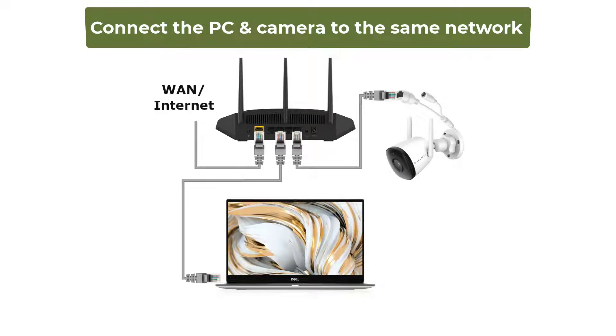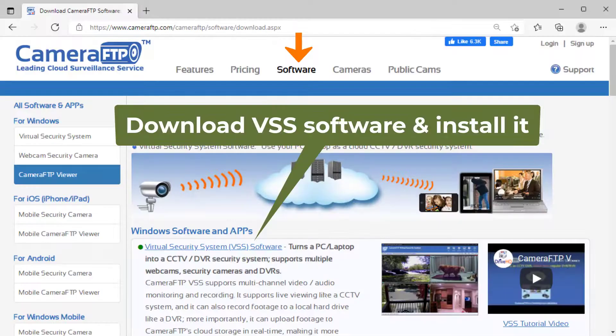First, please make sure the PC and the camera are connected to the same network. Then download Camera FTP VSS software from cameraftp.com and install it.